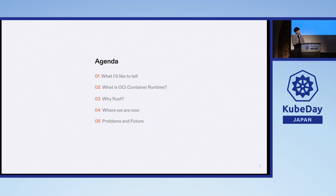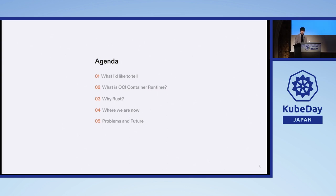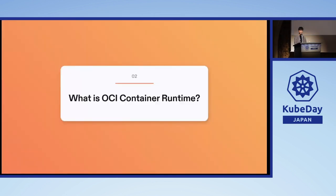This is the agenda for this session. I have explained what I wanted to share with you. After that, I will quickly explain the basic technology of what the OCI runtime is. Next, I will talk about why we are building the OCI runtime in Rust, how far it has been implemented, and the problems going forward. I'll also explain a little bit more about the OCI runtime.